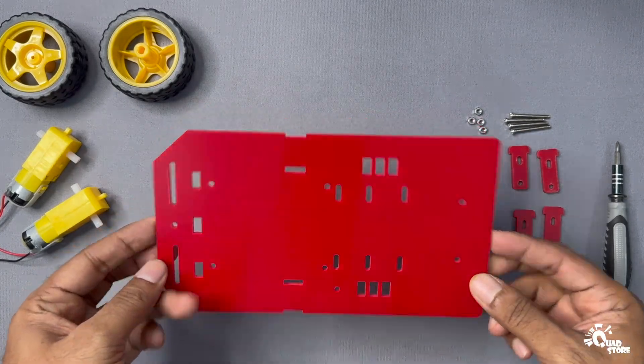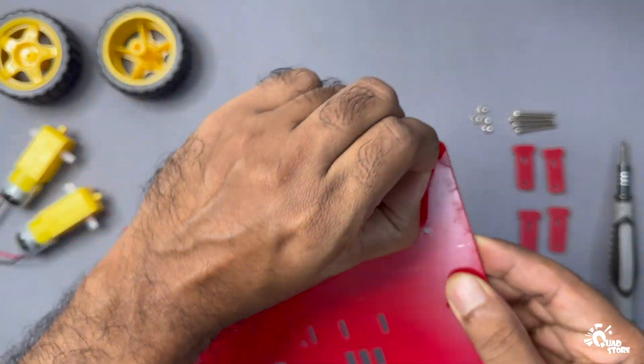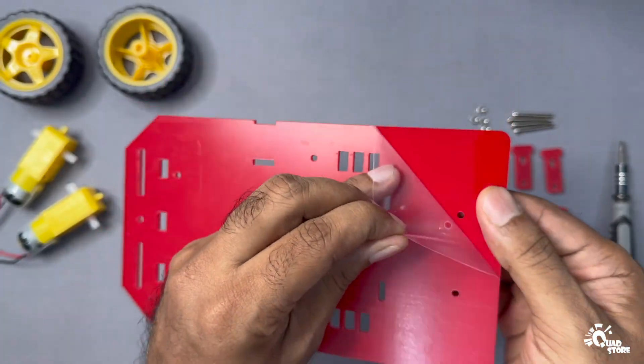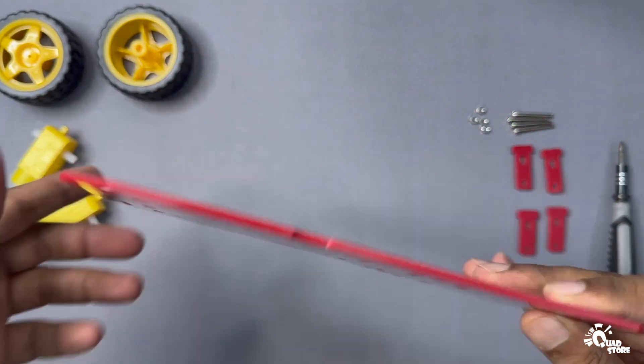Prepare the chassis plate. Start by taking the acrylic base plate and carefully removing the protective film, clear or brown, from both sides.